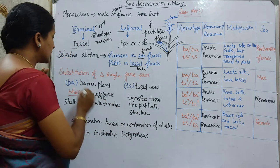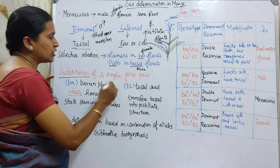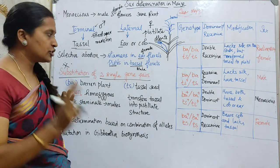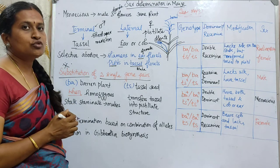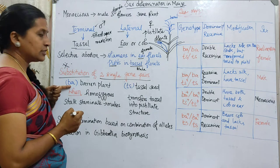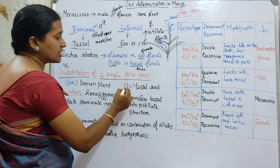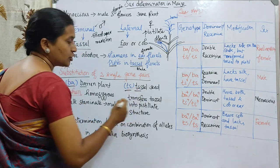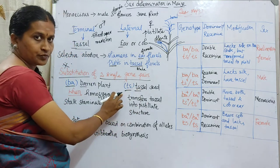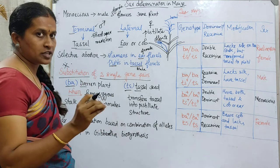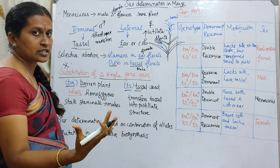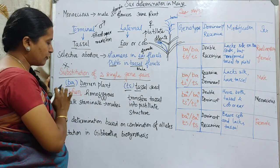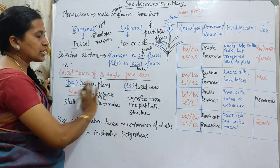This selective abortion is specific to the maize plant. This sex determination happens due to substitution mutation of two single gene pairs. We call the female flower gene 'ba' (barren plant) and the male tassel gene 'ts' (tassel). In sex determination, we write everything in small letters — 'ba' for barren and 'ts' for tassel.